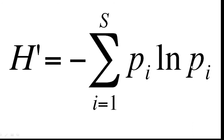The formula for the Shannon Diversity Index H is given by: H = −Σ(pi × ln(pi)), where pi is the proportion of species i relative to the total number of species, and ln(pi) is the natural logarithm of that pi. First we calculate pi, then take the logarithm, multiply them, and finally sum all pi × ln(pi) values and multiply by minus one.